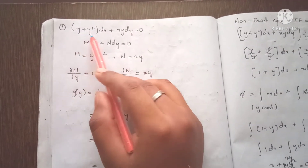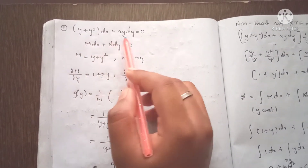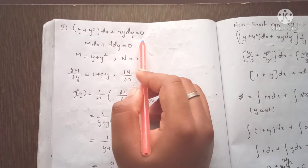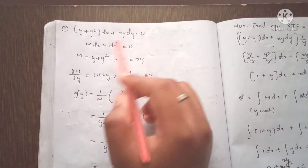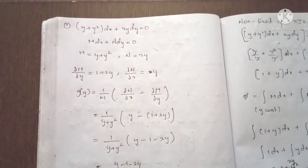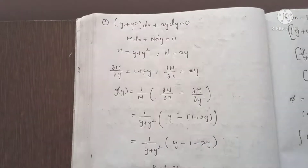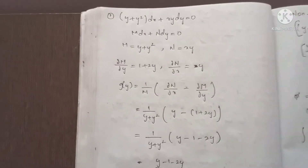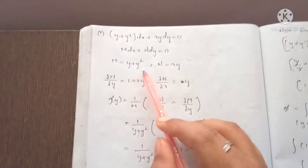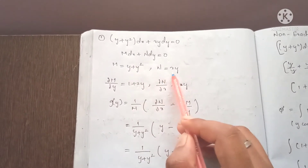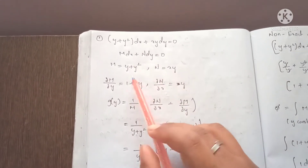Now we have a problem: y plus y squared into dx plus xy into dy equals to 0. In the form Mdx plus Ndy equals to 0, the M term is y plus y squared, and the N term is xy.